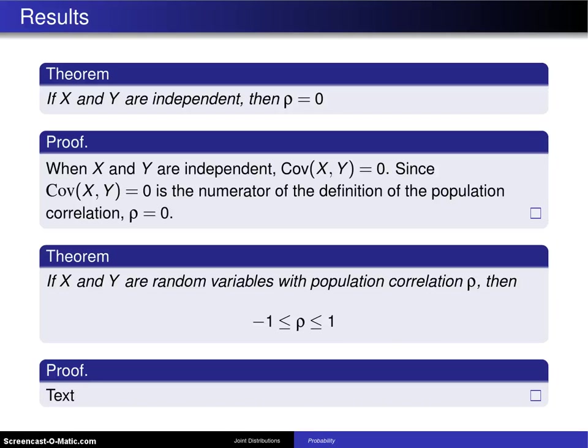Here are two theorems that are related to correlation. The first one is if X and Y are independent, then the population correlation is zero.